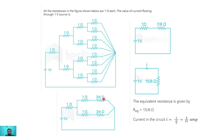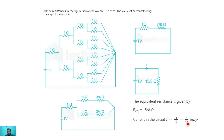The 1 ohm and 3/4 ohm in series give 7/4 ohm sections. These combine in parallel to give 7/8 ohm, and then 1 + 7/8 in series gives a total R_eq of 15/8 ohm. The current through the 1 volt source is I = V / R_eq = 1 / (15/8) = 8/15 amperes. So the current in the circuit is 8/15 A.